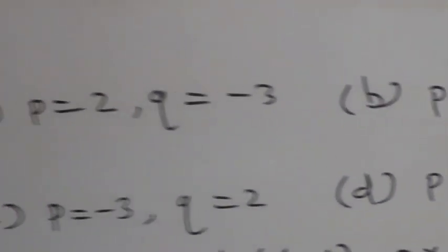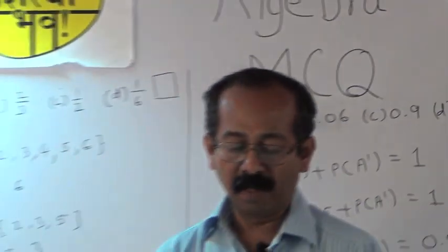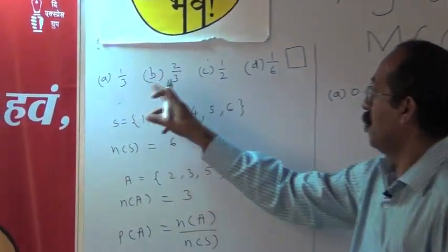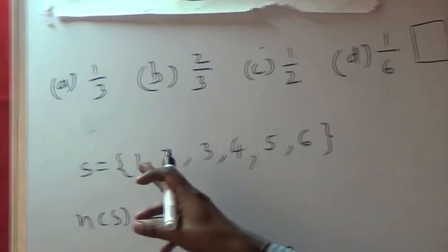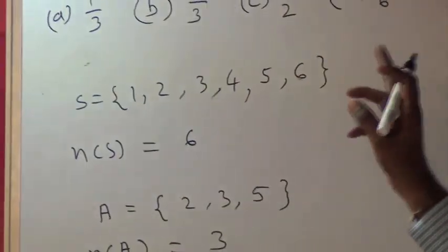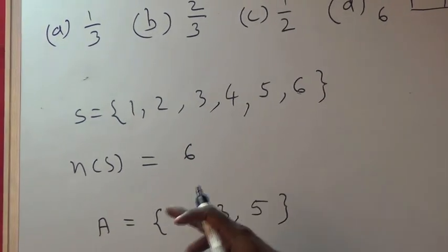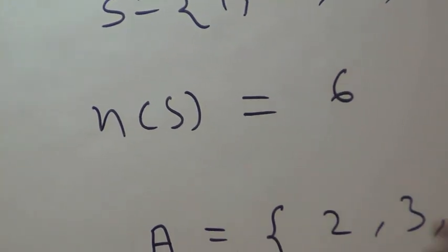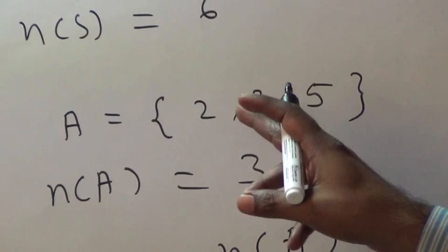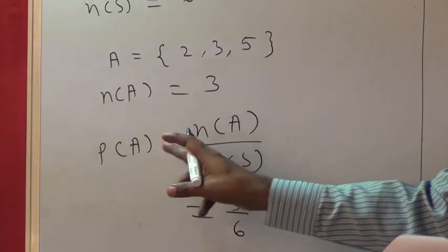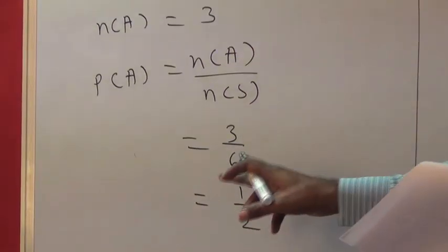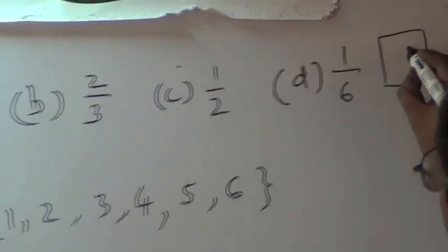Next: a die is rolled. What is the probability of getting a prime number? The alternatives are a) 1/3, b) 2/3, c) 1/2, d) 1/6. The sample space is S = {1, 2, 3, 4, 5, 6}, so n(S) = 6. The prime numbers between 1 and 6 are 2, 3, 5, so n(A) = 3. Probability of event A = n(A)/n(S) = 3/6 = 1/2. Alternative c represents 1/2, so c is the correct alternative.